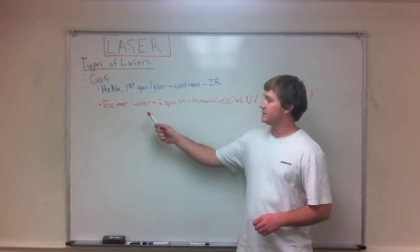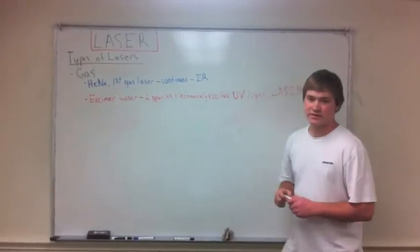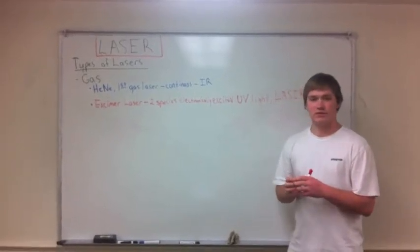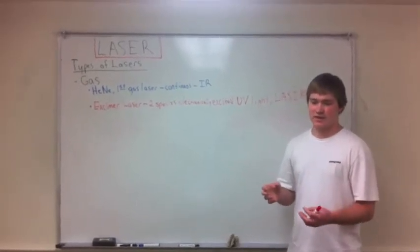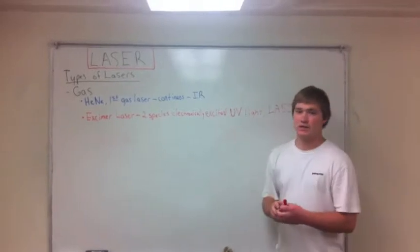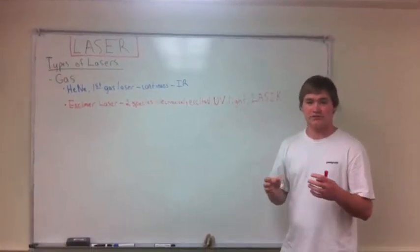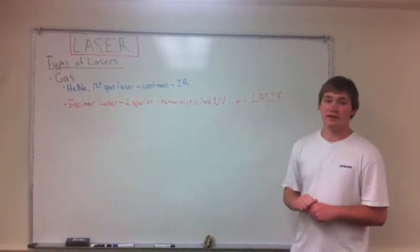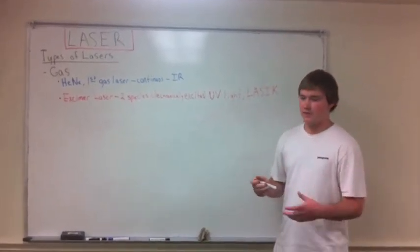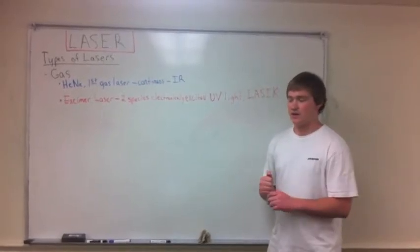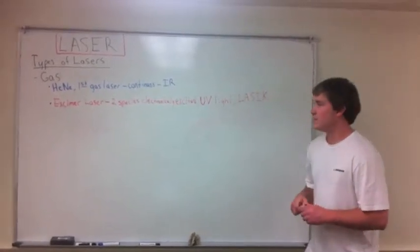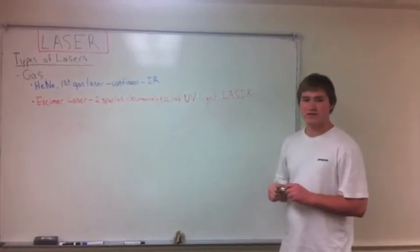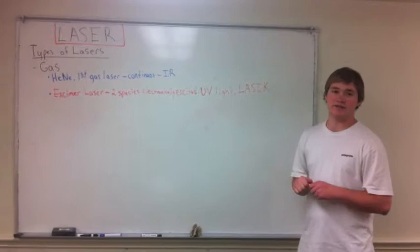Another type of laser, gas laser, is the excimer laser. Basically, the excimer laser is two species. It consists of two species that would not be found together in a ground state, but they are electronically excited and they come together and form a short-lived dimer. That dimer actually produces UV light. That is what makes the laser beam have the light that comes out of it. A few interesting applications are in LASIK surgery. The laser that they actually use is an excimer laser.